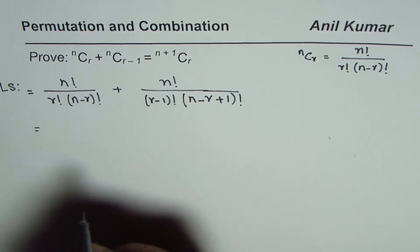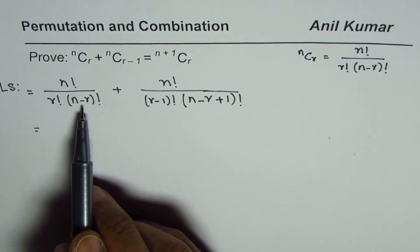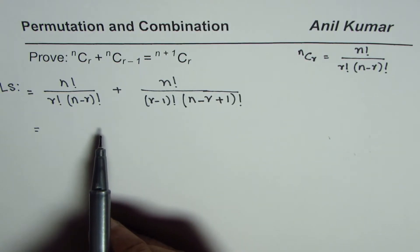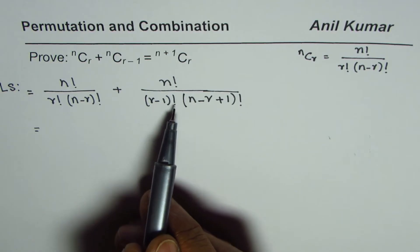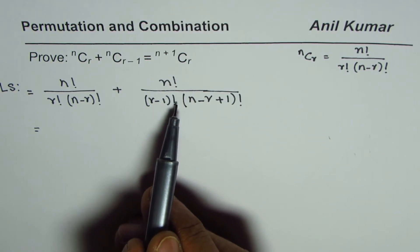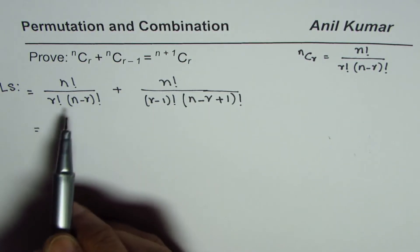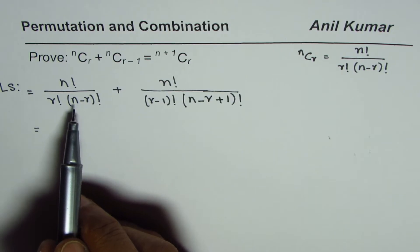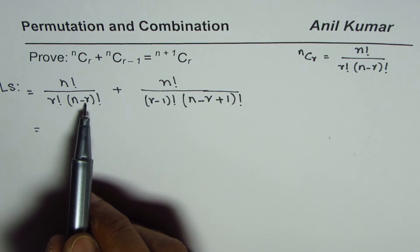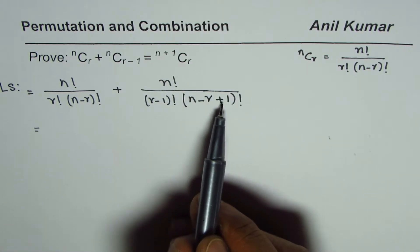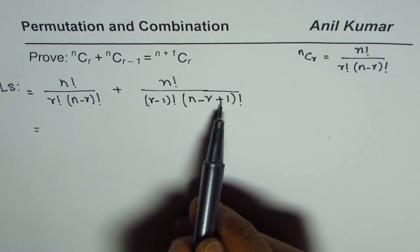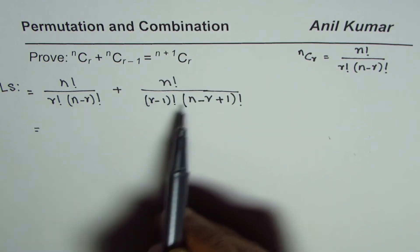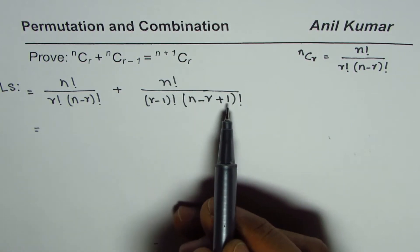Now we have to add them, so we need a common denominator. Here we have r factorial, and in the other term it is r minus 1 factorial, so we need to multiply by r. On the left side we have n minus r factorial, and here we have n plus 1 minus r factorial, so we need to multiply this by n minus r plus 1.